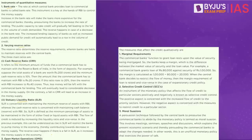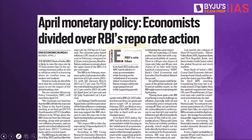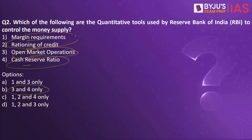Then we have the qualitative tools. These include marginal requirements, selective credit control, and moral suasion. So in this practice question, margin requirements and rationing of credit are qualitative tools, whereas open market operations and cash reserve ratio are quantitative tools. So the answer is three and four only.